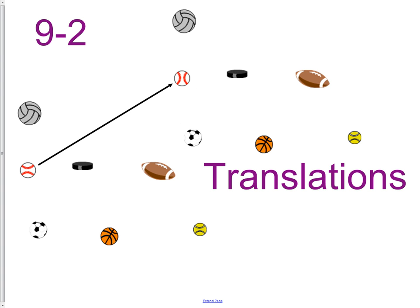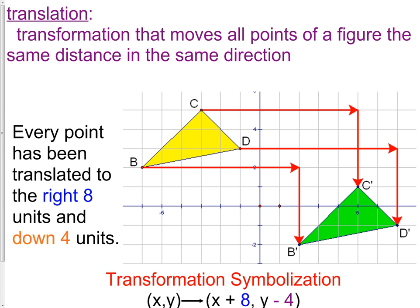A translation is simply a transformation that moves all points of a figure the same distance and in the same direction. In this picture, the yellow triangle, every point has been translated to the right eight units and down four units. If you look at point C, we go eight right and down four - that would be our translation.